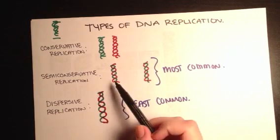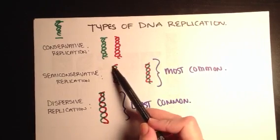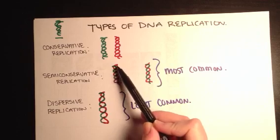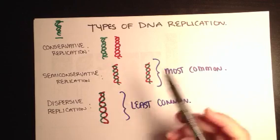Whereas in semi-conservative, there's just one whole strand that's old and one whole strand that's new.